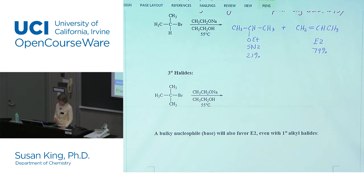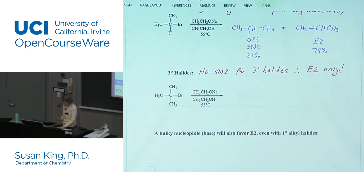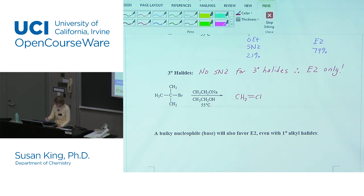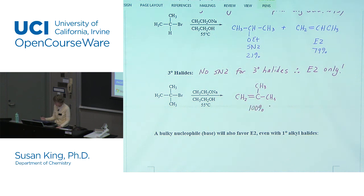Tertiary alkyl halides don't do SN2, so no SN2 for tertiary halides — therefore E2 only. We only have one possible product with this particular alkyl halide, and we get 100% of the alkene.